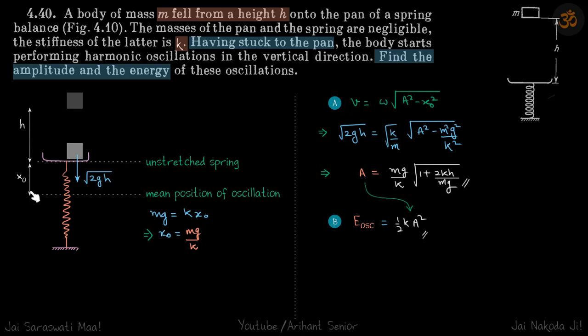If x0 is this distance, then we get x0 to be equal to mg by k. Why this distance? Because this is the undeformed position. So if it goes down by amount x0, the force upwards will be k x0 and downward force will be mg. At mean position the forces are balanced, so mg equals k x0, and x0 is therefore mg by k.